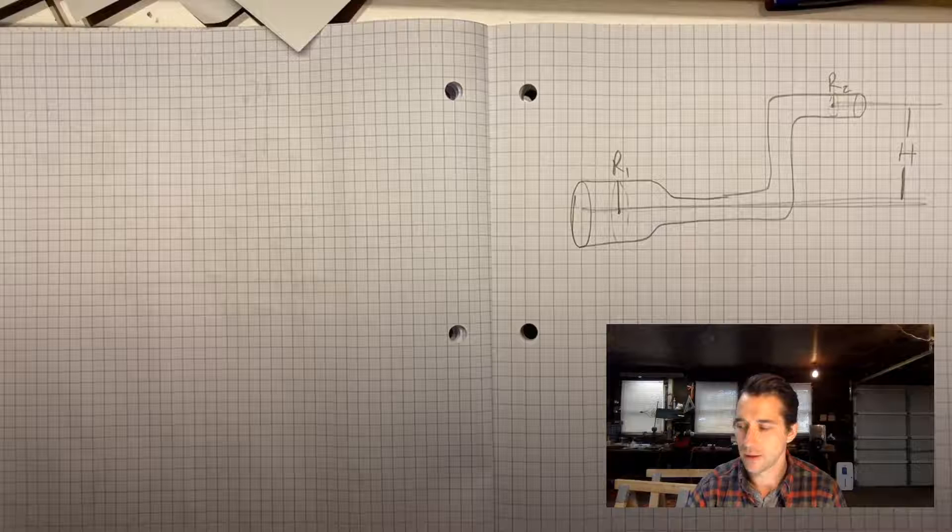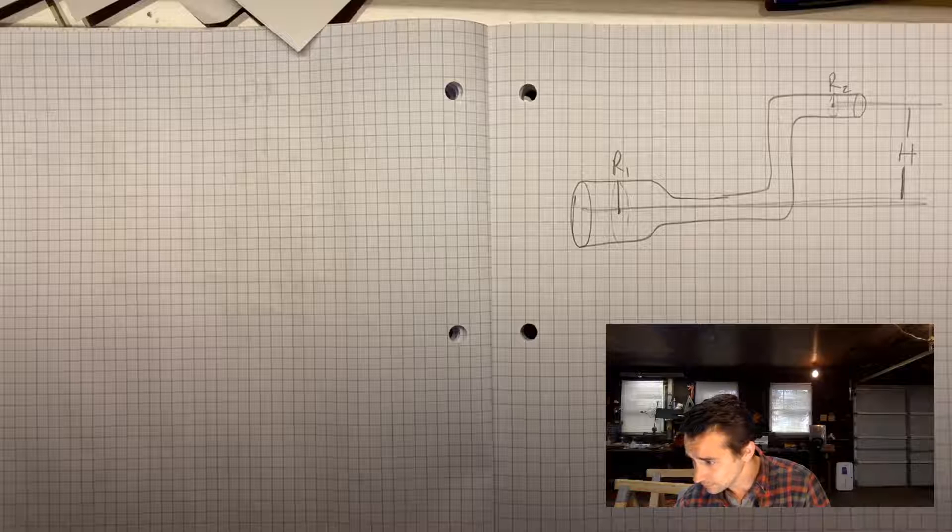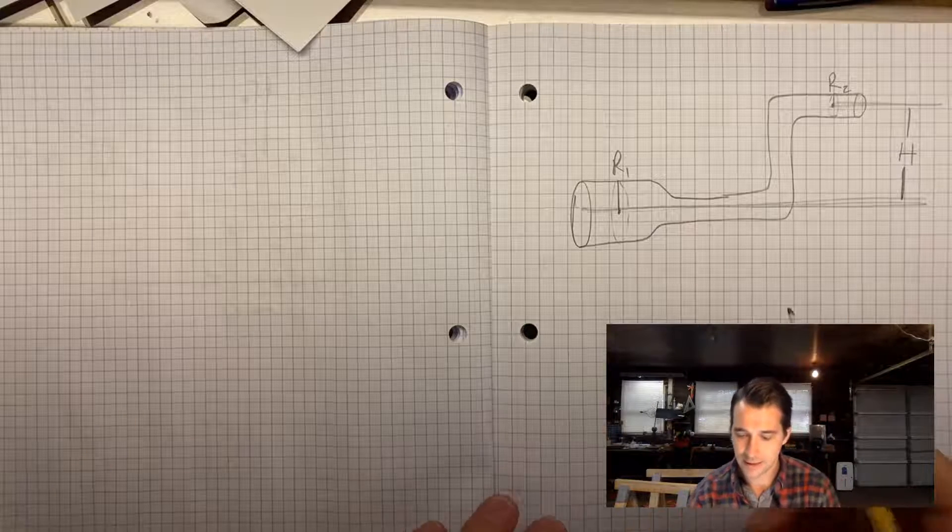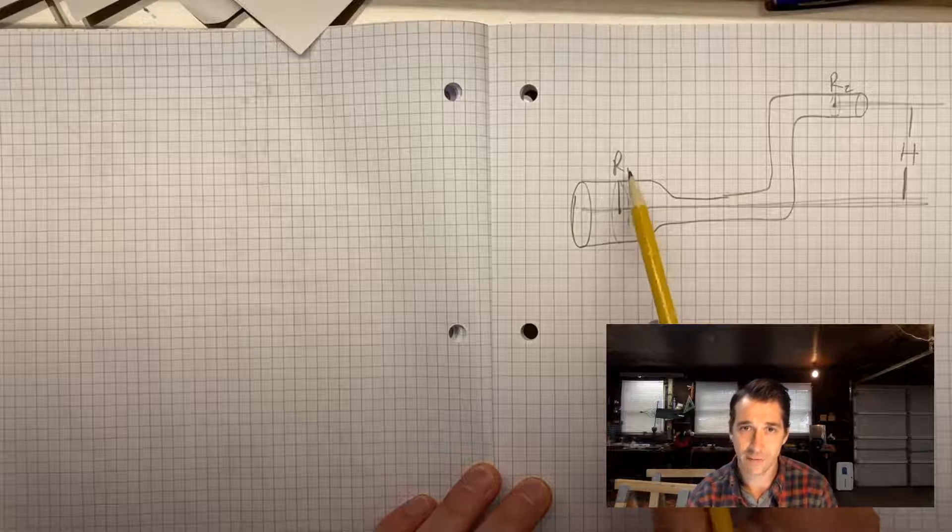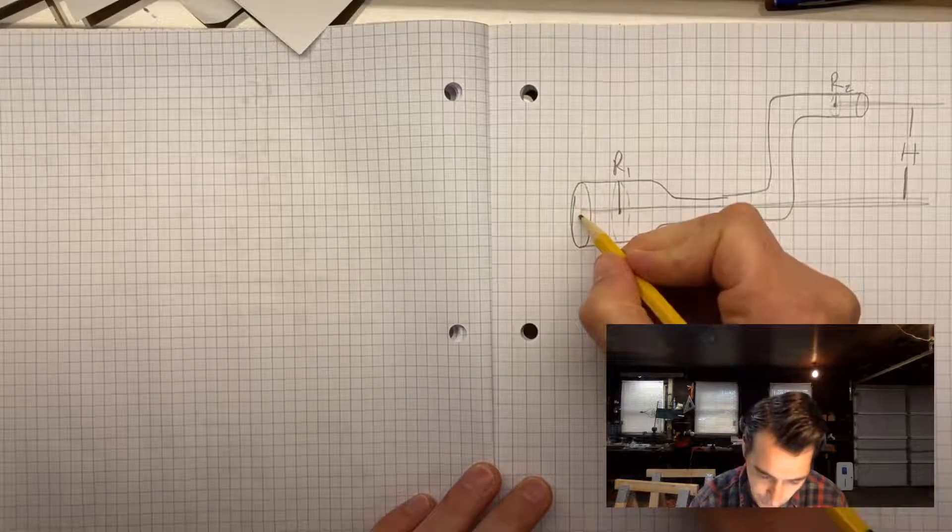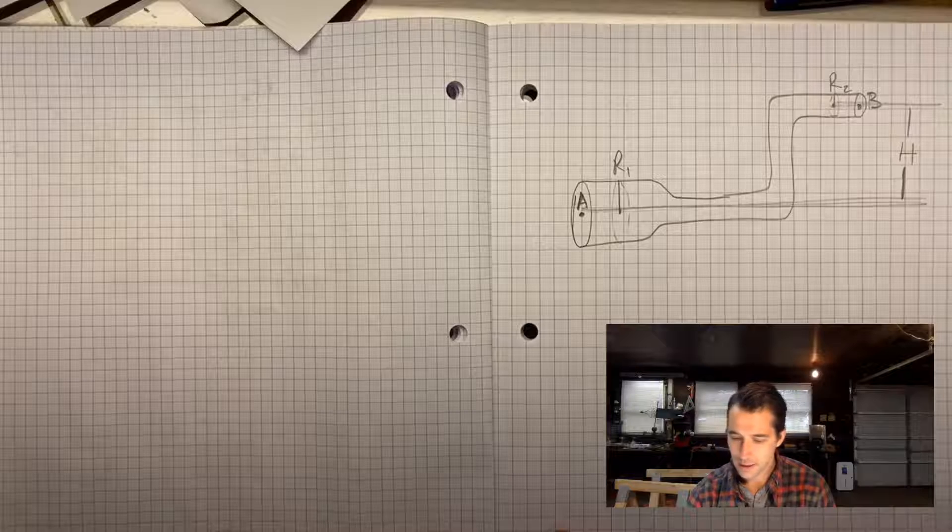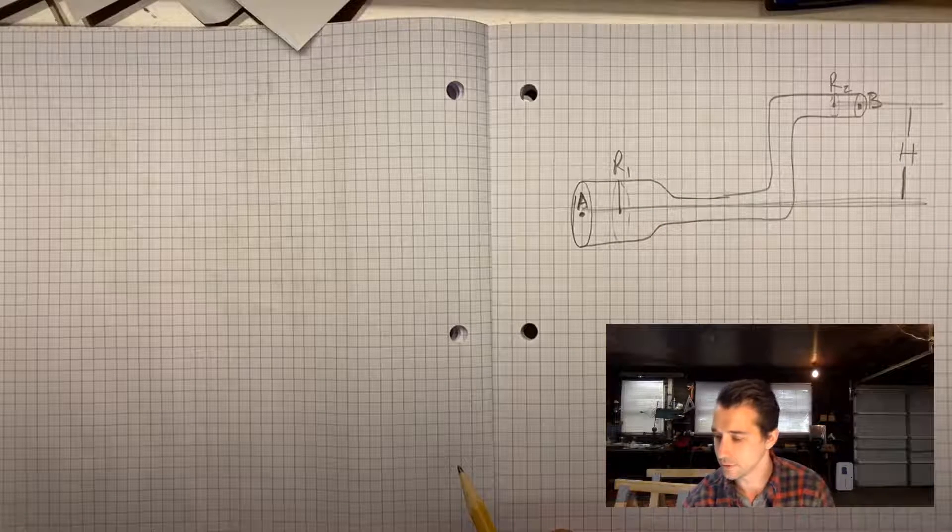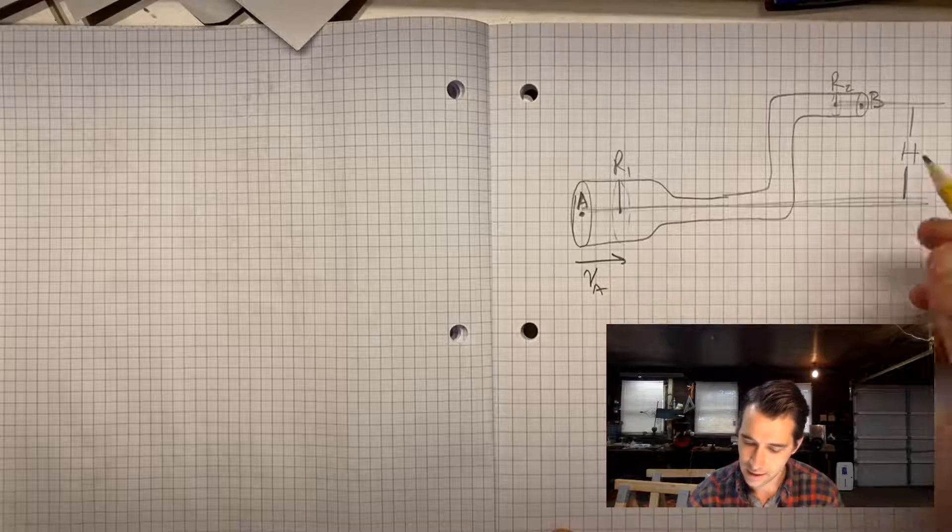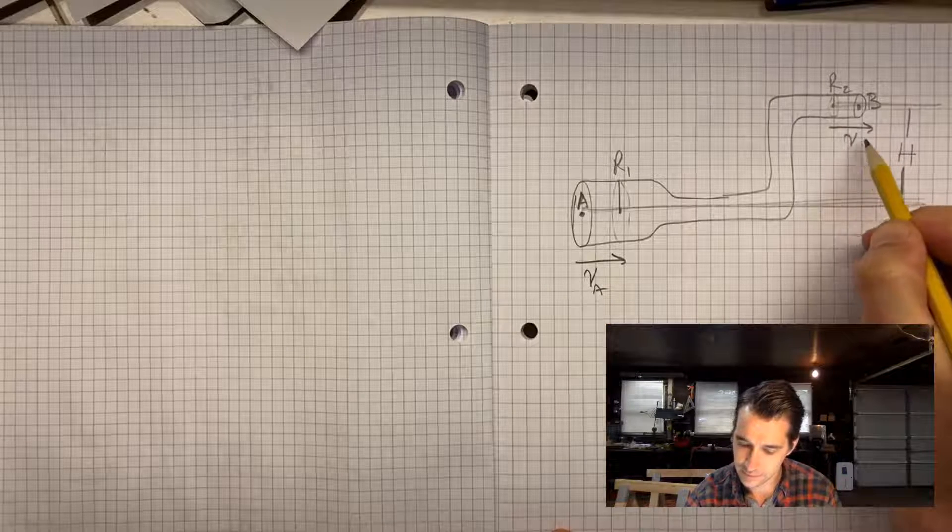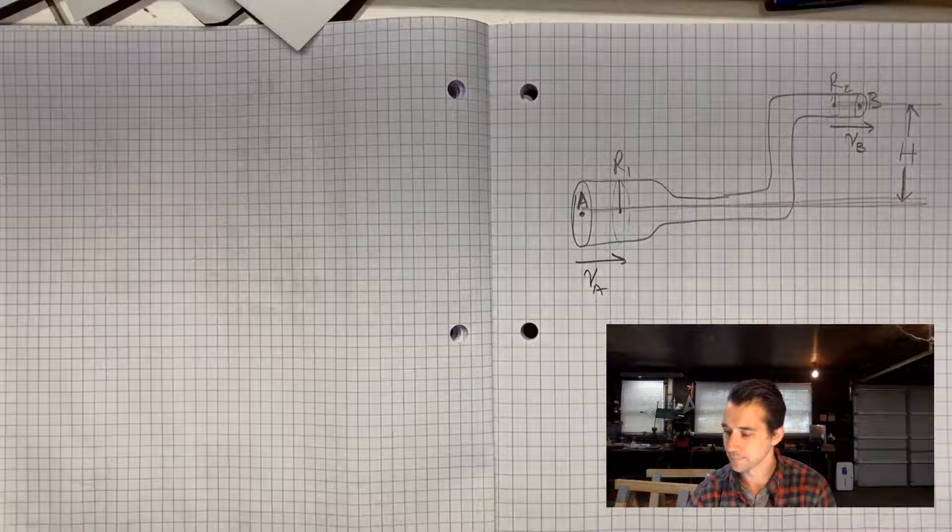So here's the problem. They're giving us a pipe with some liquid flowing in it. Actually, it's water, so we can take that as water, and they're telling us that we have a radius R1 at this location. They label these points A, and over here on this end, this is point B. And so we have R1 and R2. We can see R2 is smaller than R1. They also tell us, I'm going to put it to the side, our liquid is moving at VA, and over here it's moving at VB.